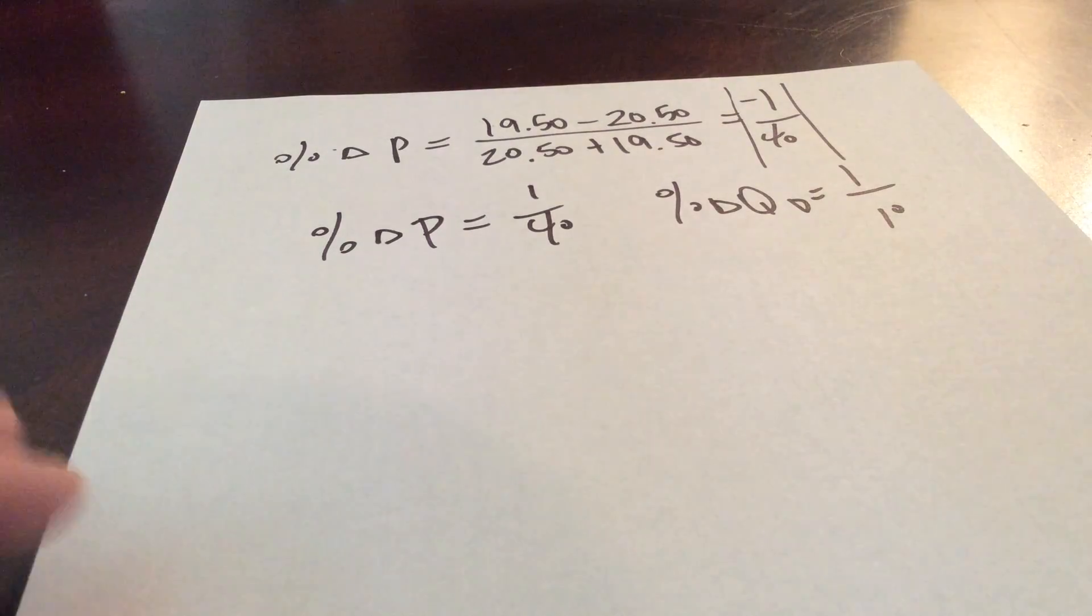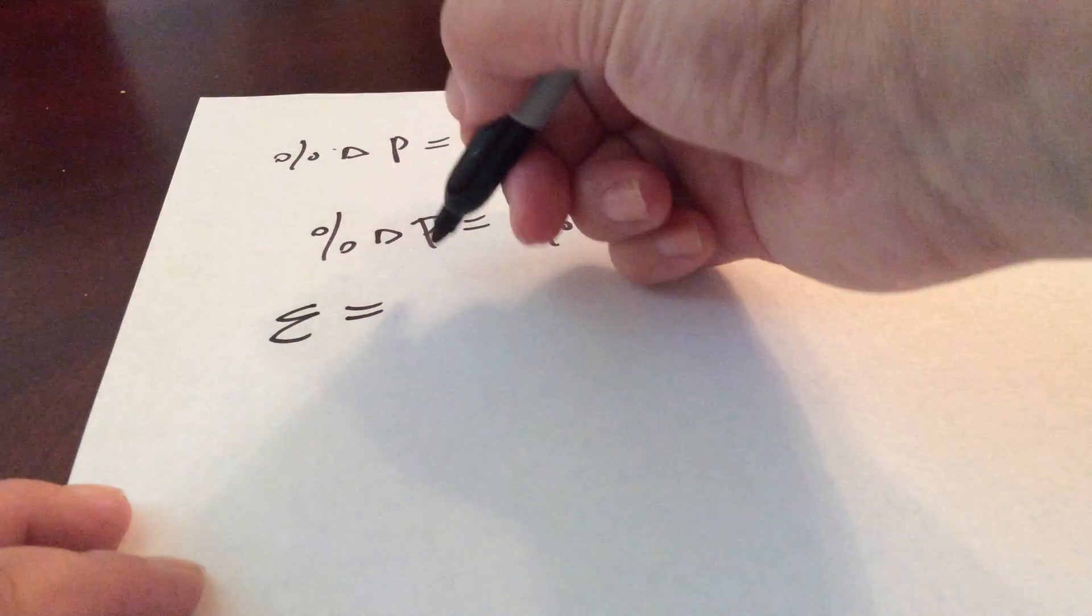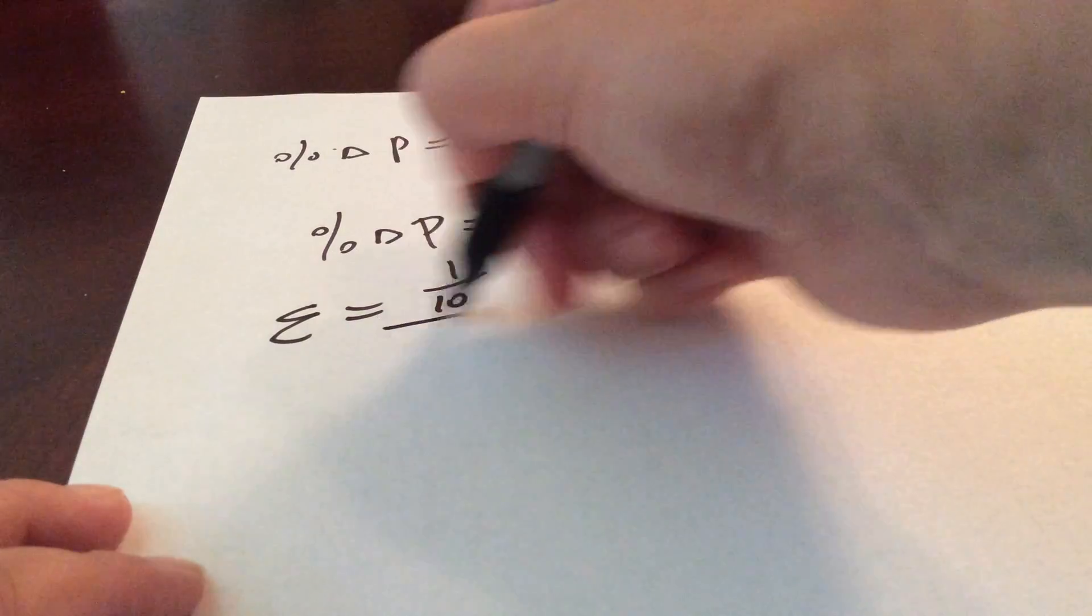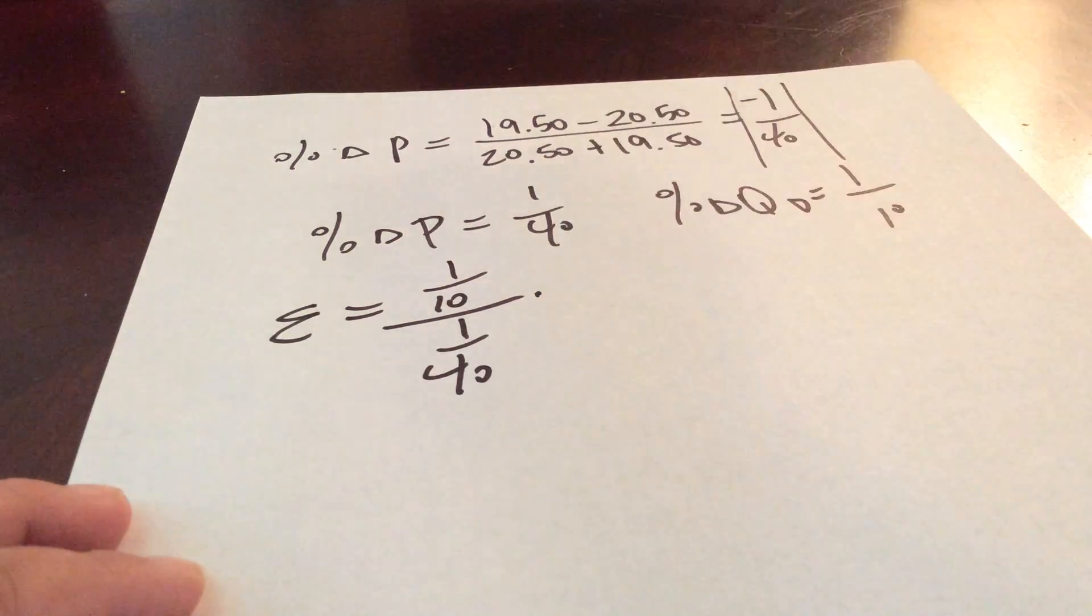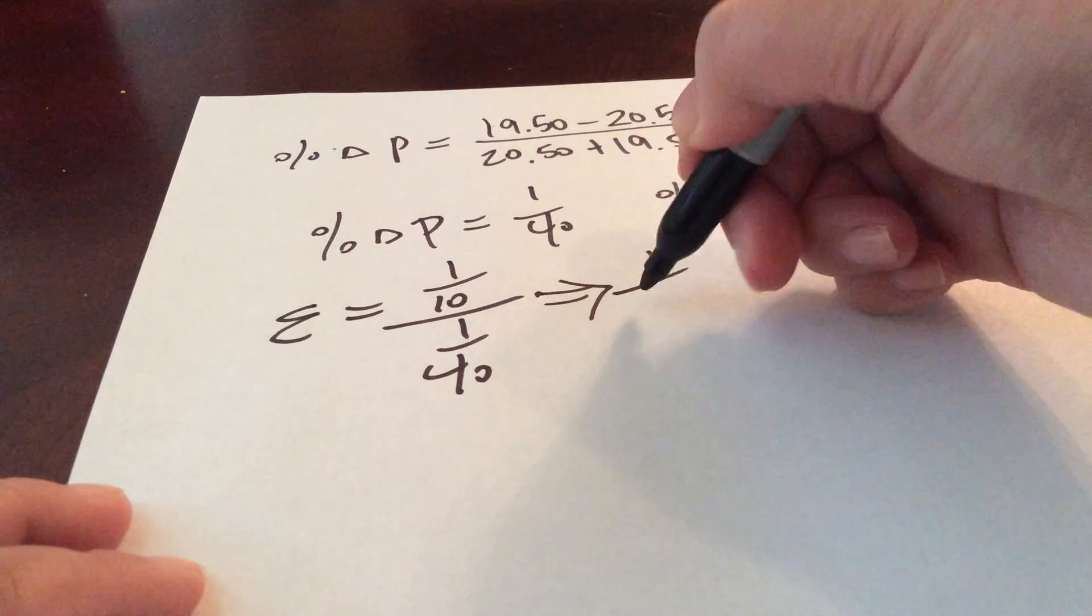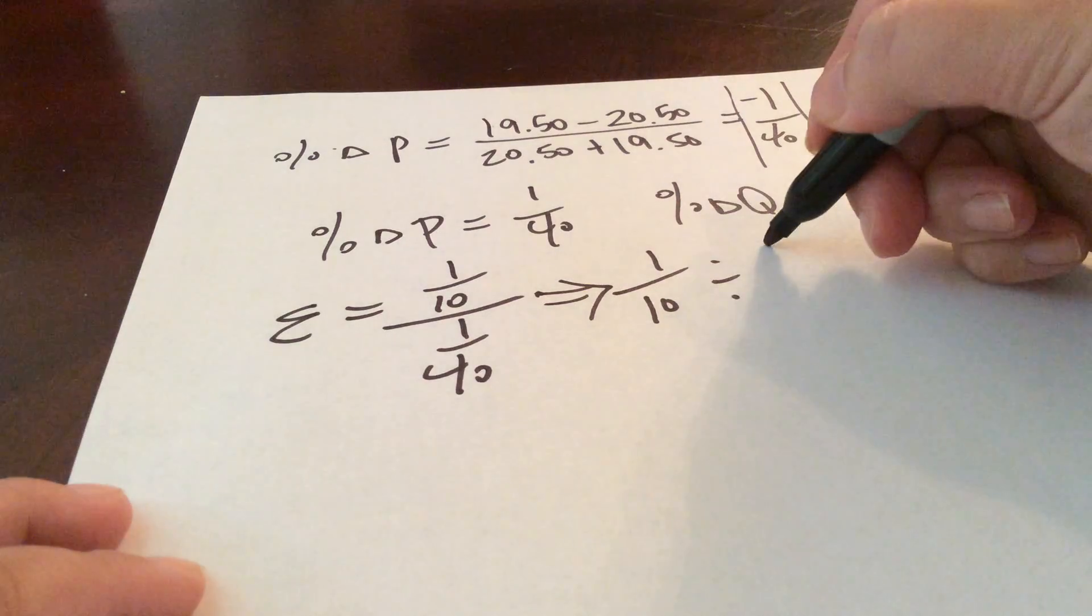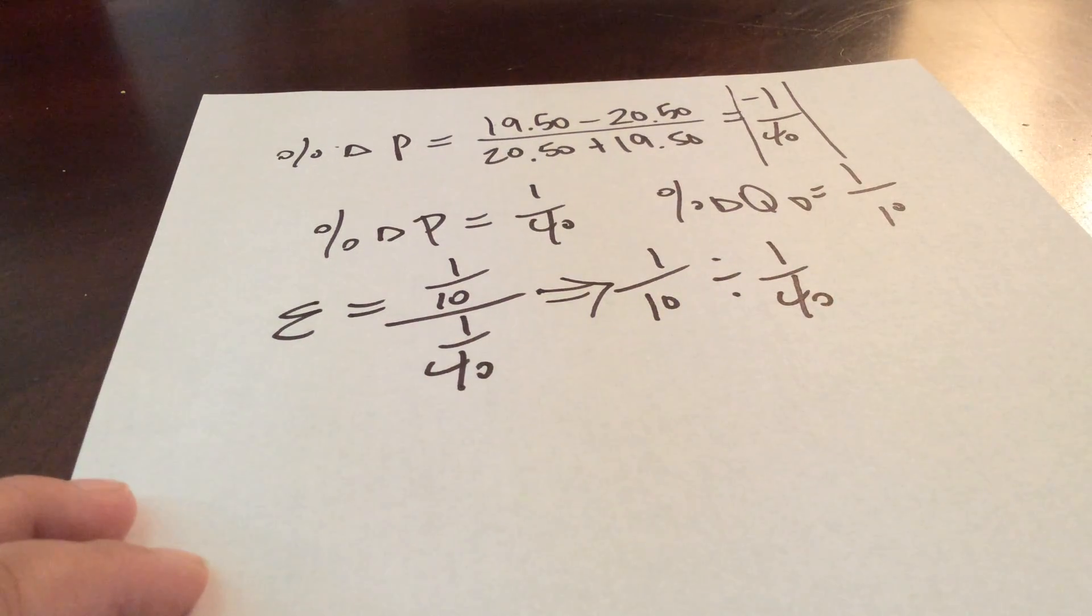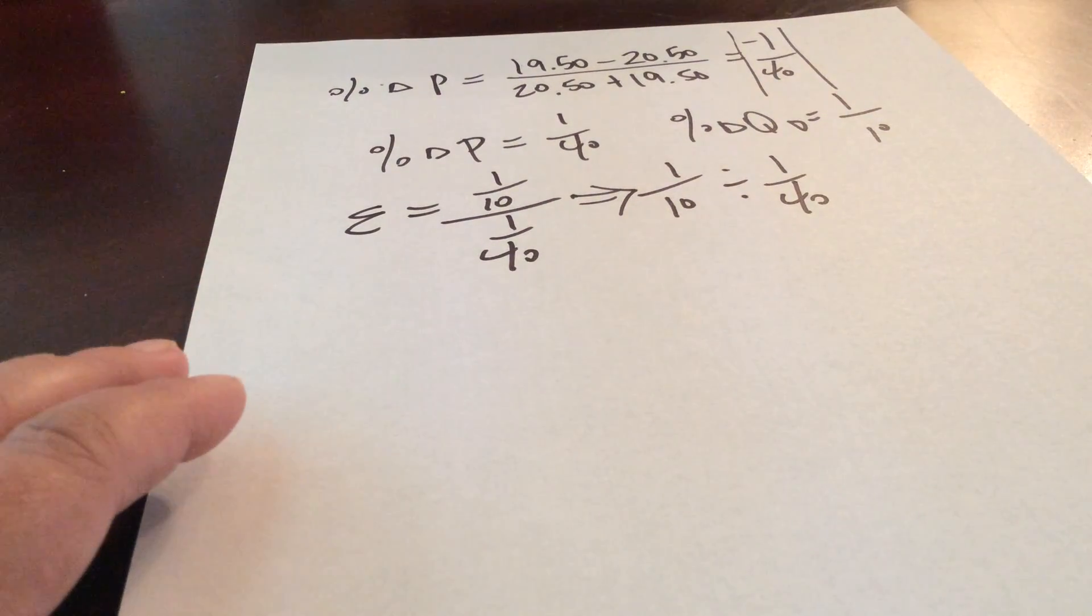So now we're going to put these together. So our elasticity equals 1/10 over 1/40. And you can think of this bar here as a divide sign. So I could rewrite this equation as 1 over 10 divided by 1 over 40. Remember your basic rules of math. When we divide by fractions, we simply multiply by the reciprocal.